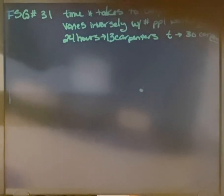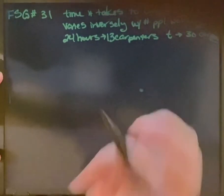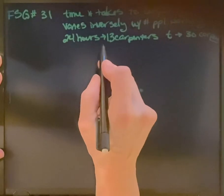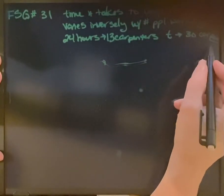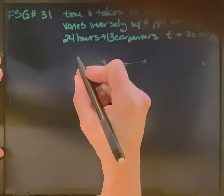This question is telling us that the time it takes to complete a job varies inversely with the number of people working in that job. It's telling us that it took 24 hours to complete a job with 13 carpenters. If they had had 30 carpenters, how long would that job have taken?